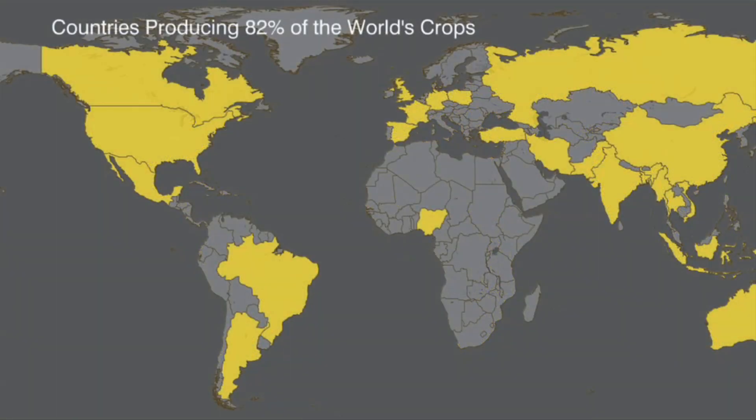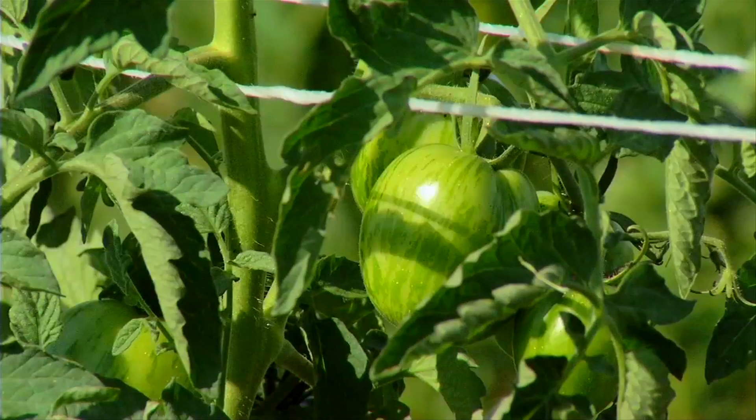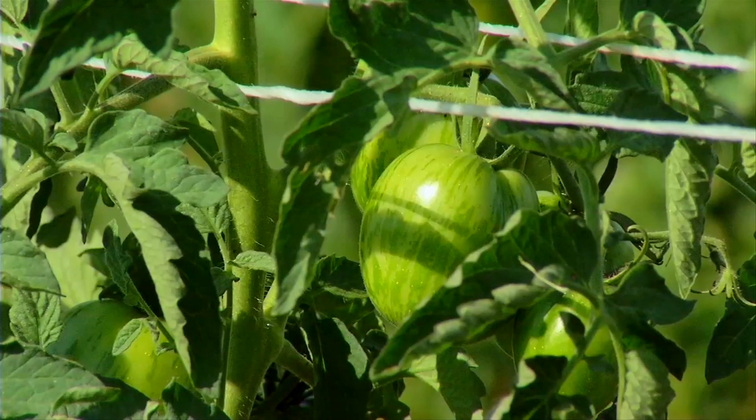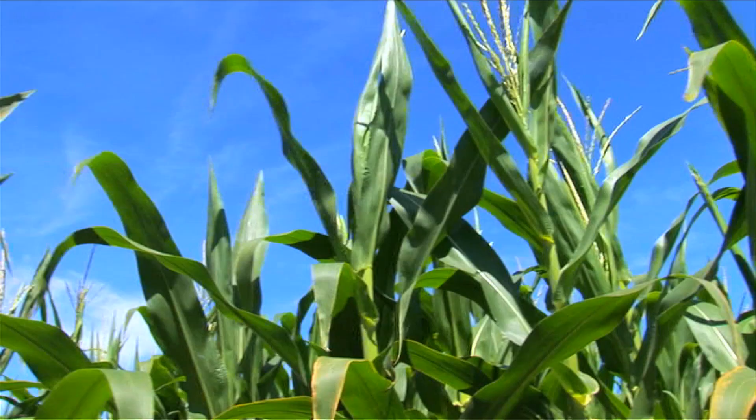We link satellite imagery with ground observations and rainfall data to determine the impact of drought on plant productivity. And what we're talking about is photosynthesis.